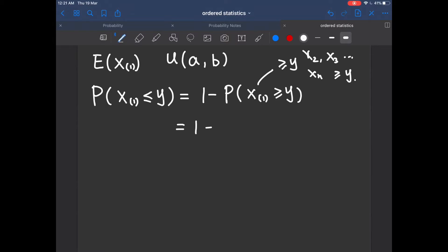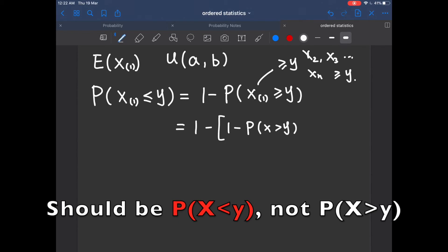So this probability can be converted to 1 minus P of X bigger than y to the power of n. And since now we have changed the range of the uniform distribution, we know that y minus a divided by b minus a is the probability of this. So we just need to sub that in.